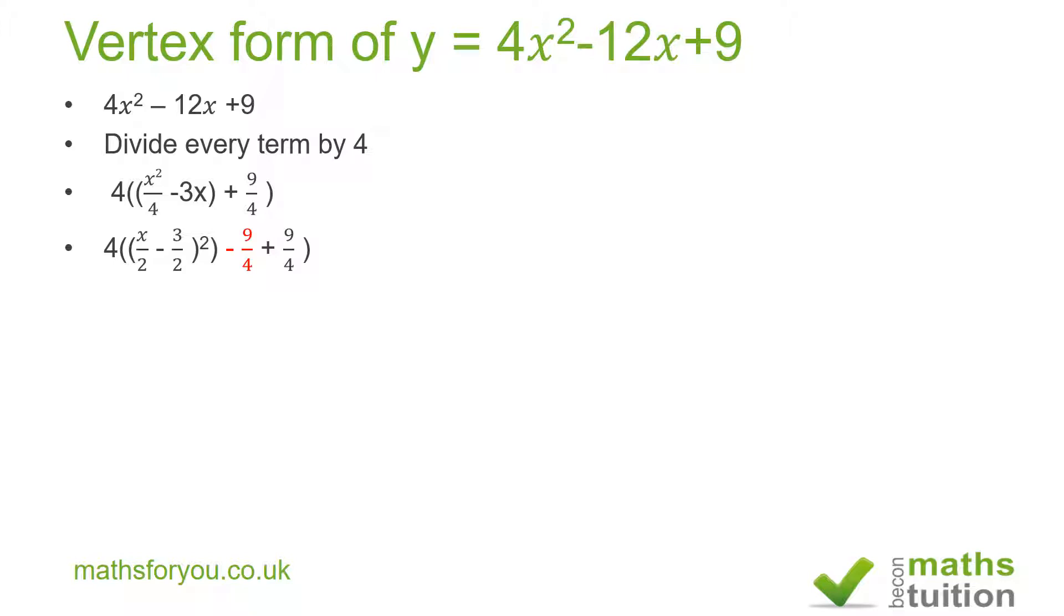And the square of that. Now when you open up this bracket (x/2 - 3/2)², you end up with an extra 9/4 which does not exist there, so we need to subtract 9/4 to create this balance there.